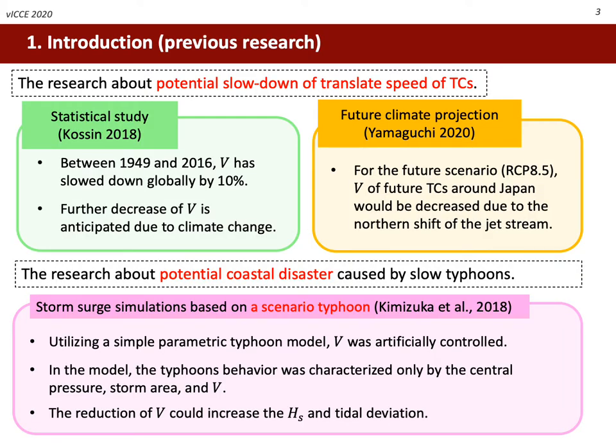In the field of meteorology, the potential slowdown of translate speed of future typhoons was pointed out both by statistical and numerical approaches by Koshin and Yamaguchi respectively. The relationship of the changing translate speed and storm surge was investigated by Kimizuka, which is summarized below.